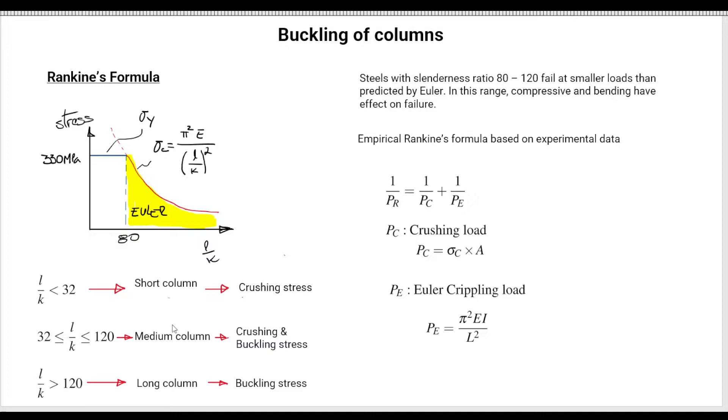However, when we were starting using this classification of having medium columns, it was not clear what was the slenderness that was going to dictate that the main failure mechanism was going to be either crushing or buckling. That's why this 80 here appears in the exercise we did previously with Euler.